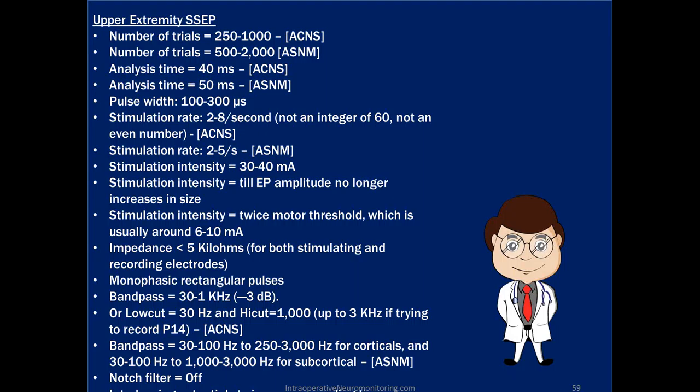The number of trials suggested is 250 to 1,000 by the ACNS and 500 to 2,000 by the ASNM. Personally, I don't stimulate anywhere near that many times — I don't find it necessary — but those are the numbers you need to know going into the CNIM.